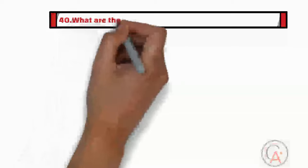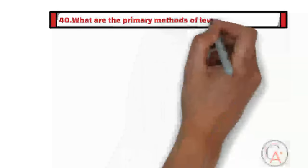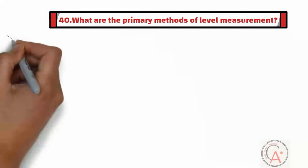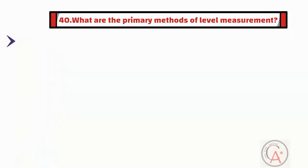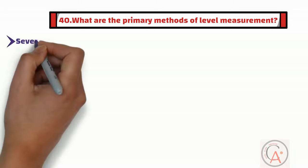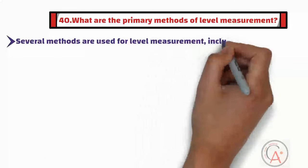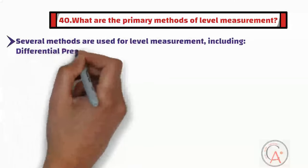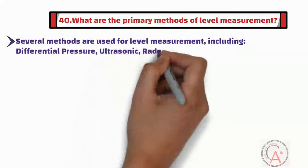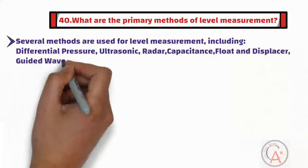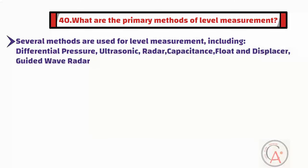Question forty is: what are the primary methods of level measurement? There are several methods of level measurement, which include differential pressure, ultrasonic, capacitance, float and displacer, and guided wave radar.